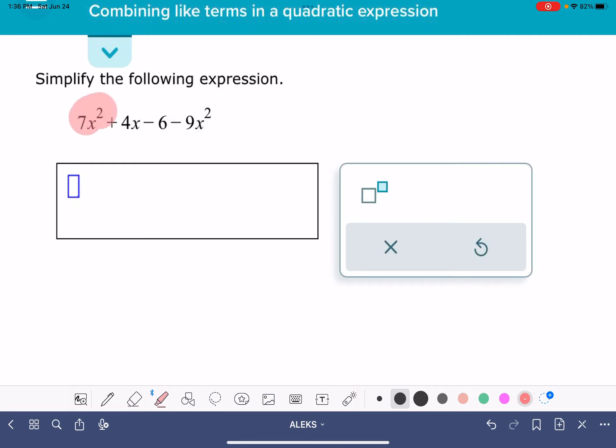So in this equation, we have two terms that have an x squared variable in them, and we're going to be able to combine those terms together. I'm going to start by rewriting this expression so that these terms are side by side.